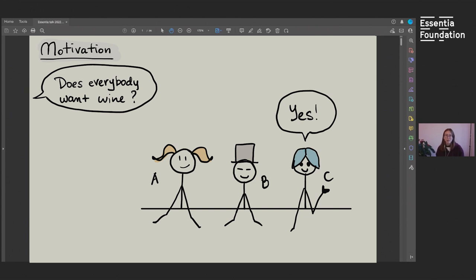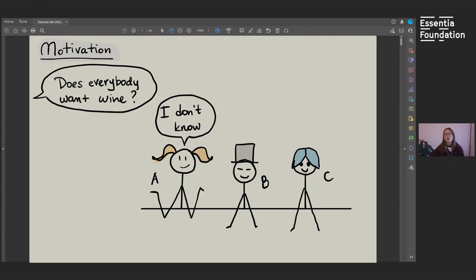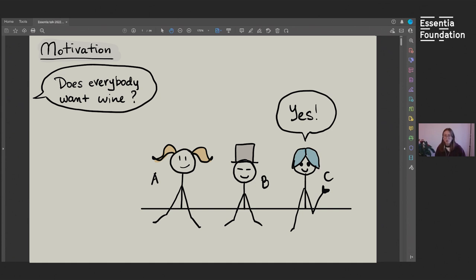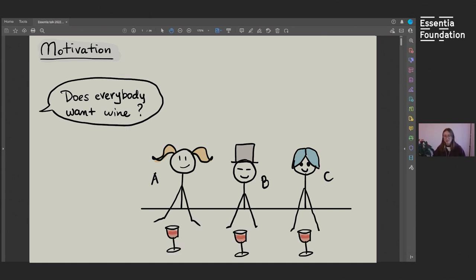And a bartender asks them, does everybody want wine? And they answer this question in order. So at first Alice says I don't know. Then Bob also says I don't know. And then Charlie says yes. So the question is, how did Charlie deduce that everybody in this group wants wine? So first, Charlie took the perspective of Alice and started thinking from her point of view. If Alice wouldn't have wanted wine, then she would have said no because not everyone in the group would want wine. But she answered I don't know, which means that she does want a glass of wine. Same with Bob. And then Charlie, also wanting to order a wine, says yes and everybody gets their glass.